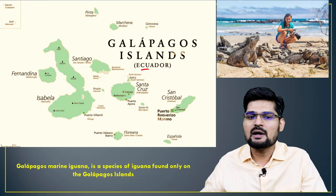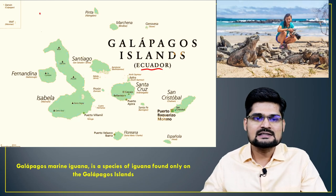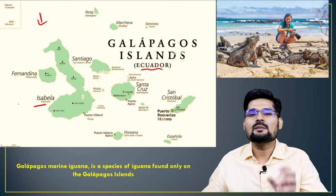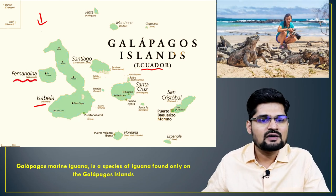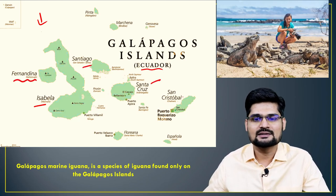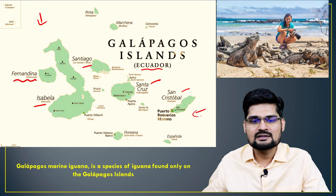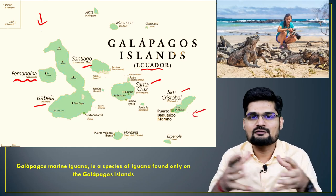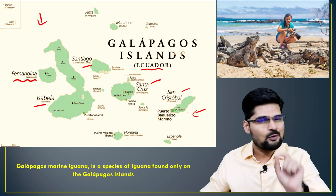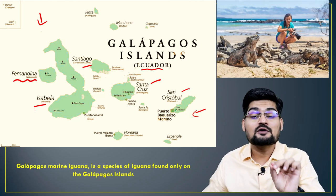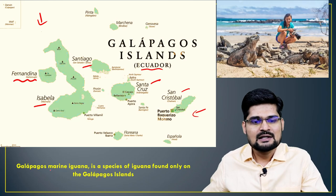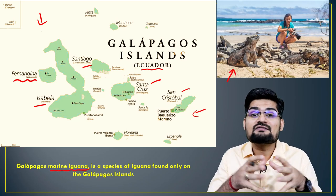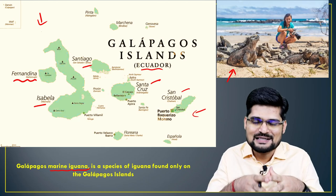The Galapagos Islands are part of Ecuador. It is a collection of many islands, of which Isabella is the biggest, followed by Fernandina, Santiago, Santa Cruz, San Cristobal, and several others, connected from Ecuador. If you want to travel here, you go through Ecuador or Peru. These islands are famous for biodiversity — notably the marine iguana, a creature essentially found on this particular island.